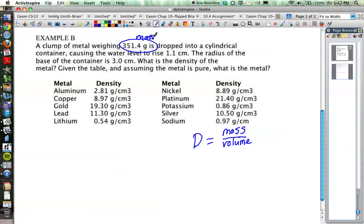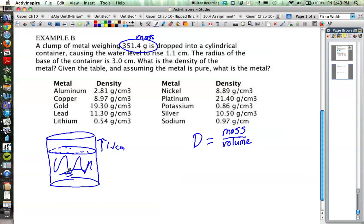It says it's dropped into a cylindrical container and the water level rises 1.1 centimeters. Let's draw a cylindrical container. Here's our cylindrical container and here's the water level. We know this water level is going to go up 1.1 centimeters. The water rises 1.1 centimeters because at the bottom of the container is the rock we put in there. The water level goes up 1.1 centimeters.